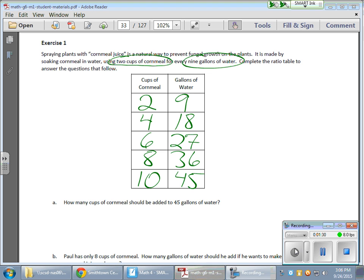Okay, so that's my table, and now I have some questions that go along with it. The first question is, how many cups of cornmeal should be added to 45 gallons of water? Well, right there, you can see that on the table, we have our 45 gallons of water, and for that, we're going to need 10 cups of cornmeal.